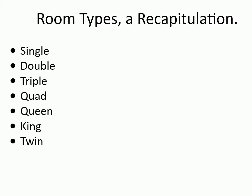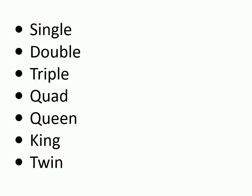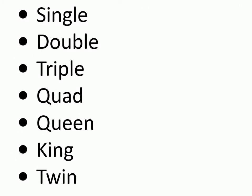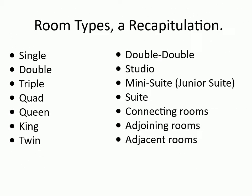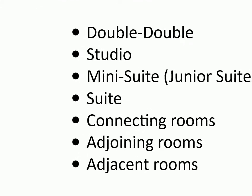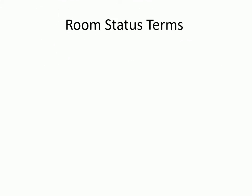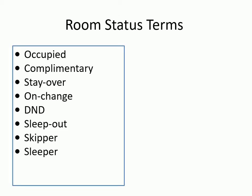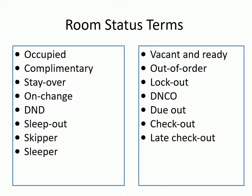Room types include: single, double, triple, quad, queen, king, twin, double-double, studio, mini suite, junior suite, suite, connecting rooms, adjoining rooms, and adjacent rooms. Room status terms include: occupied, complimentary, stay over, on change, DND, sleep out, skipper, sleeper, vacant and ready, out of order, lock out, DNCO, do out, checkout, and late checkout.